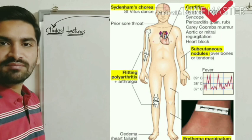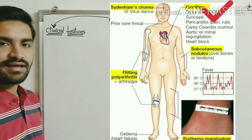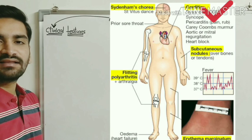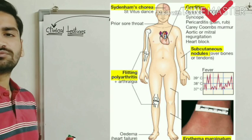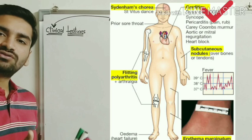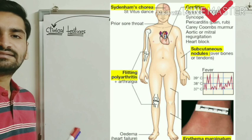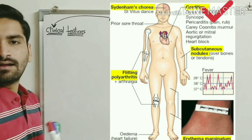An important murmur to remember is the Carey Coombs murmur, which is a soft mid-diastolic murmur. Nodules grow on the valve leaflets, leading to valvulitis — inflammation of the valves — which produces this murmur. Patients also experience aortic or mitral regurgitation. Tricuspid and pulmonary regurgitation are comparatively less common.